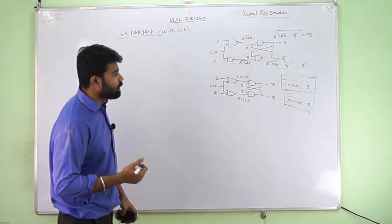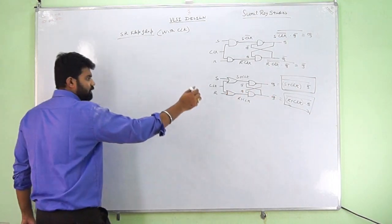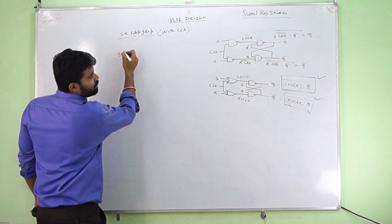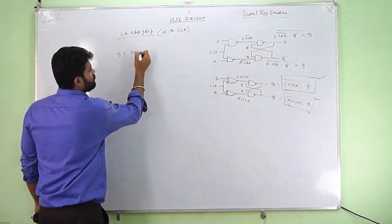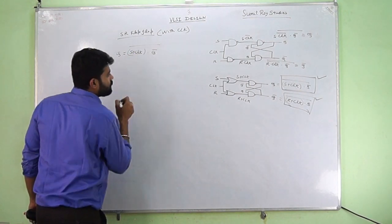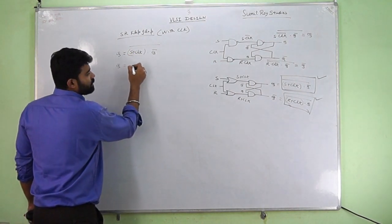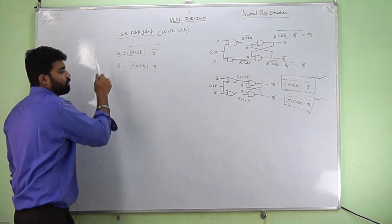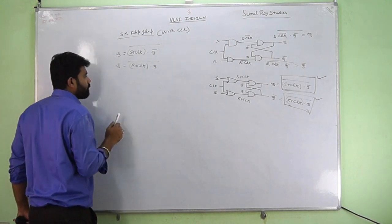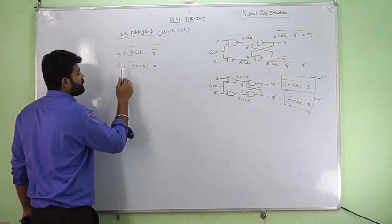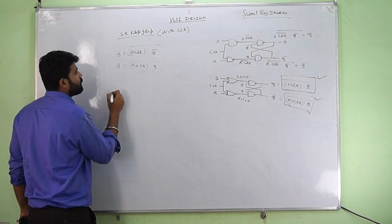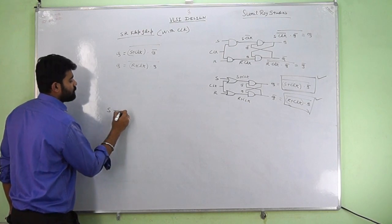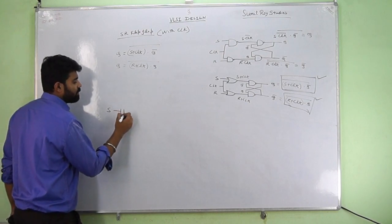First we will start with the CMOS circuit. What we are having is: Q = (S+clock)·Q̄ bar, and similarly Q-bar = R+clock·Q bar. So we are having this. Now what we can do is draw the CMOS diagram. For this CMOS diagram will be S+clock, so directly I will start the CMOS diagram.